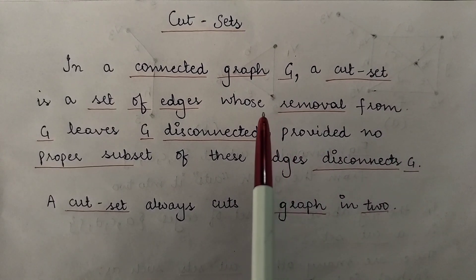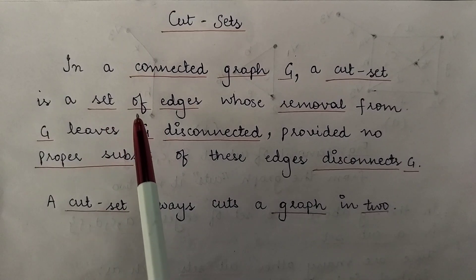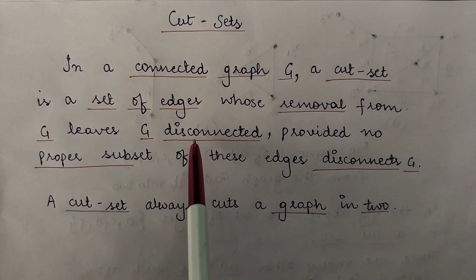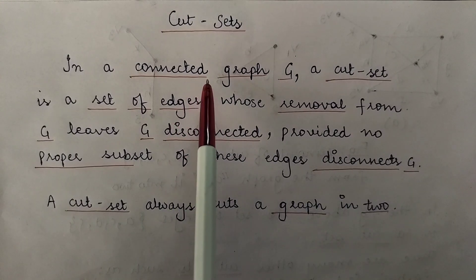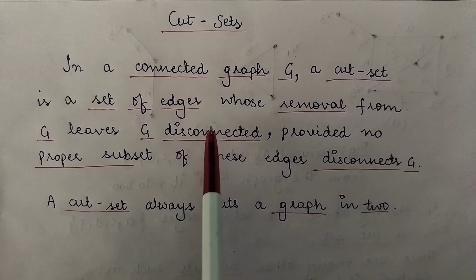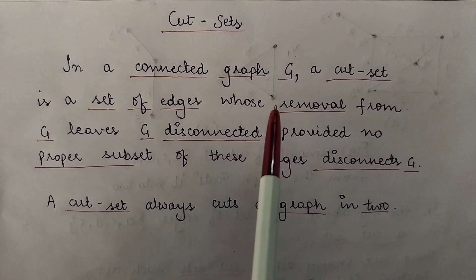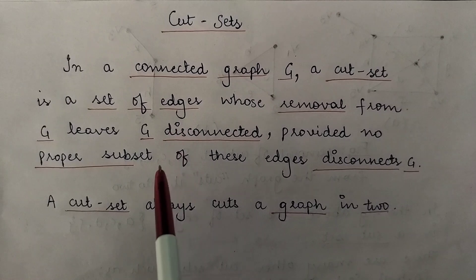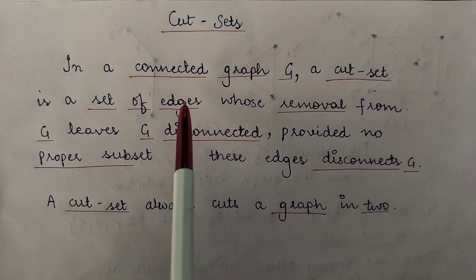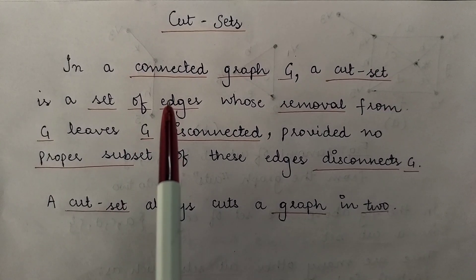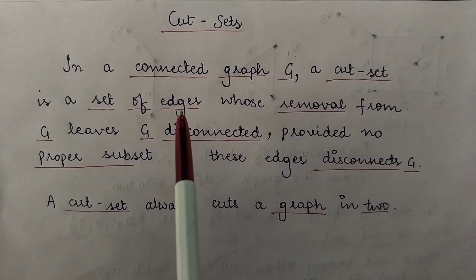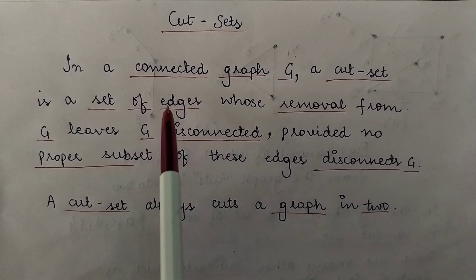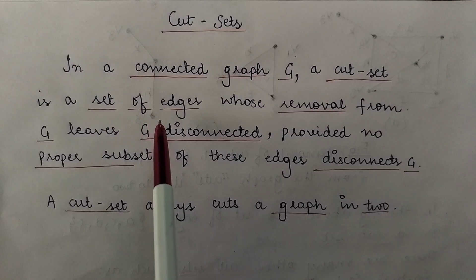Basically, a cut set is a collection of edges which, when removed from a connected graph, would leave that connected graph disconnected or divide it into two separate components. The other condition is that the proper subset of these edges should not disconnect the connected graph. So you need a collection of edges which when removed leaves the graph disconnected, and no proper subset of these edges should disconnect the graph.